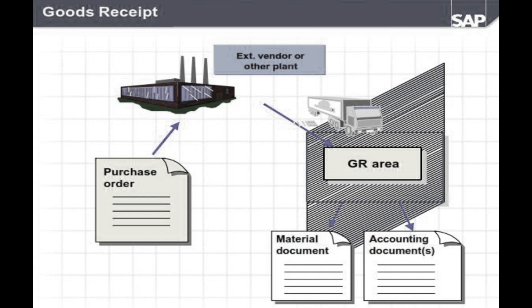When you post the GR for the inbound delivery, the following functions are carried out. First, the warehouse stock — the material is increased by the delivery quantity. The value changes are posted to the balance sheet into inventory accounting. The goods receipt posting is automatically recorded in the document flow. After the GR is done, the scope of changing the delivery document is very limited, which prevents any discrepancies between the goods receipt document and the inbound delivery.